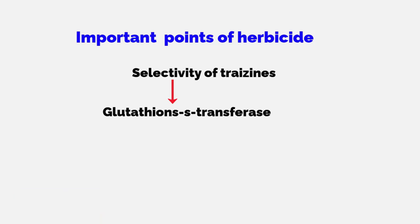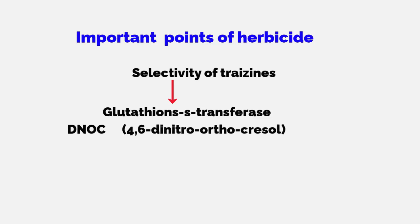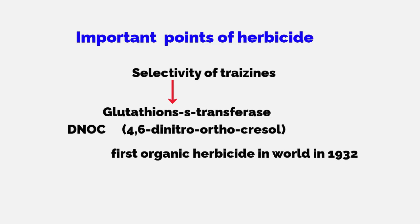DNOC stands for 4,6-dinitro ortho cresol and was the first organic herbicide, developed in 1932.